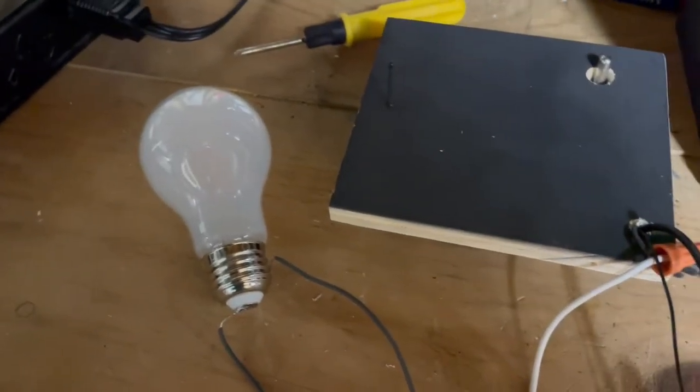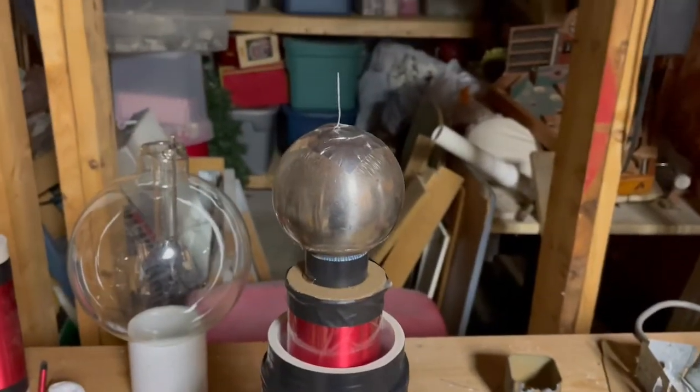Alright, so here's the coil with the 60 watt ballast and everything else is going to be the same. Let's see how it works. Okay, so this ballast literally sucks. Look at the puny output on this.